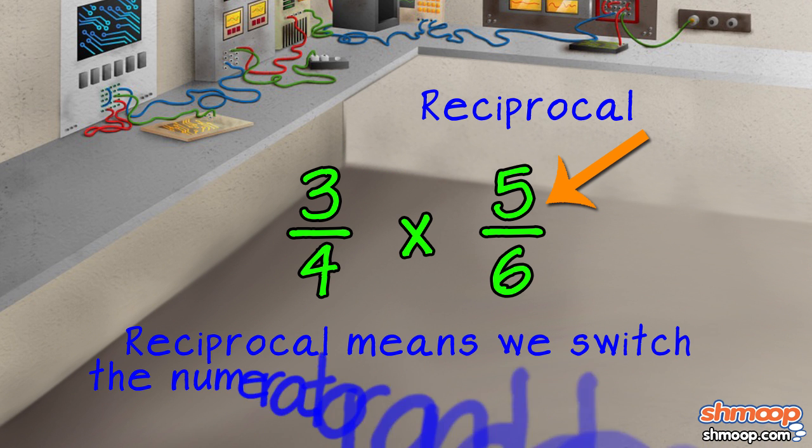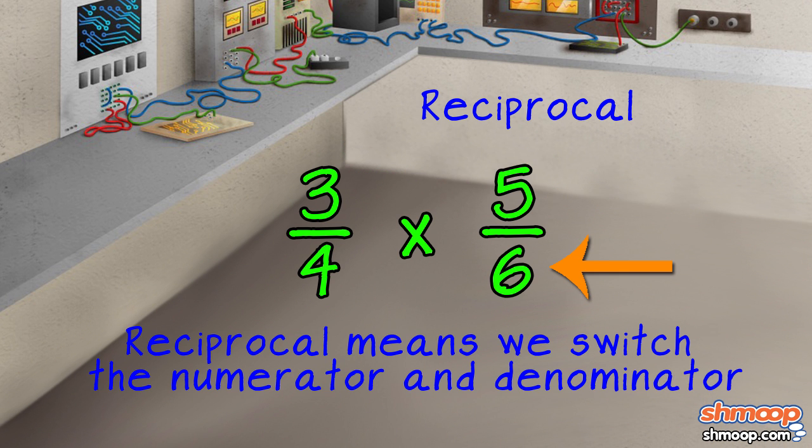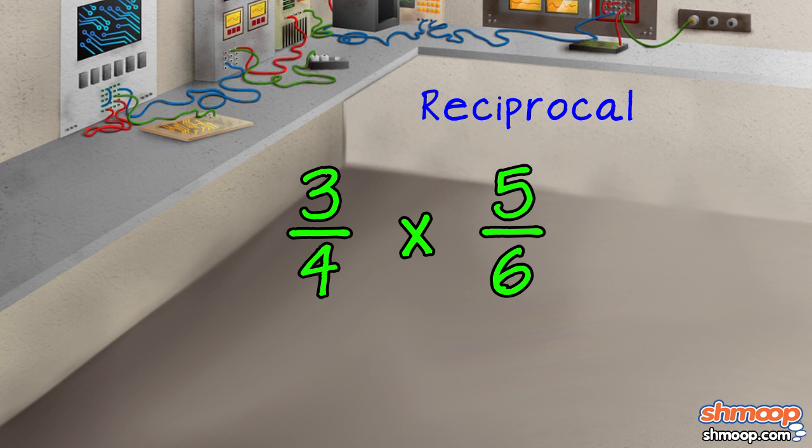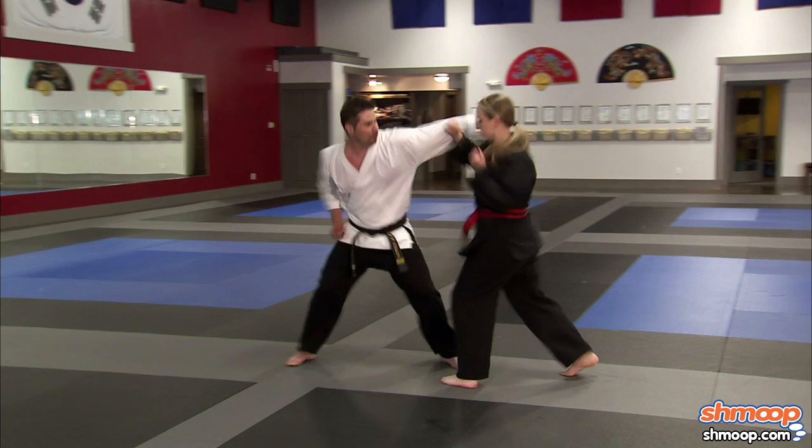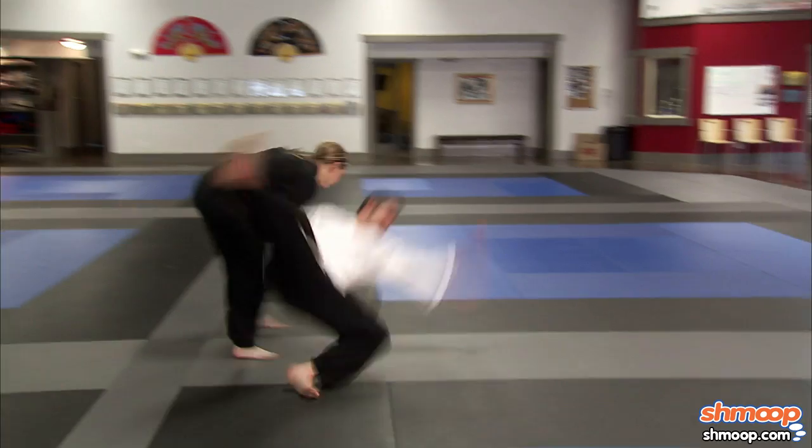The reciprocal just means that we switch the numerator and the denominator. To take the reciprocal of the second fraction, simply flip 5/6 and turn it around into 6/5. And we get this. Basically, the top becomes the bottom, and the bottom becomes the top.